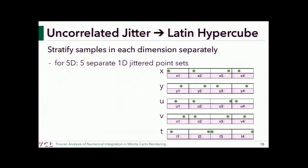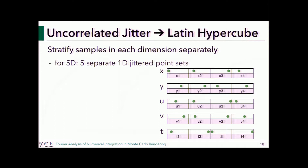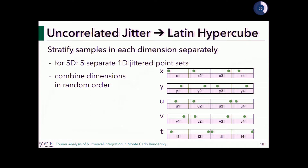Another approach: instead of stratifying jointly in 2+2+1 dimensions, stratify every dimension independently. This is easy and works for any number of samples. If you want 18 or 20 samples, each dimension gets 18 or 20 strata. The problem is: even though each dimension is stratified, a 5D sample combining one value from each dimension may only cover one corner of the 5D space, not sampling it evenly.